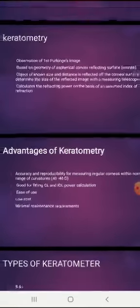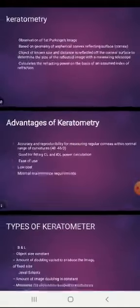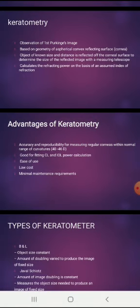Keratometry is mainly based on the size of the Purkinje image. There are four Purkinje images in our eyes, and the first one forms on the cornea. This image is the basic means for measuring the corneal radius of curvature as well as the corneal astigmatism of the patient by using the keratometer.